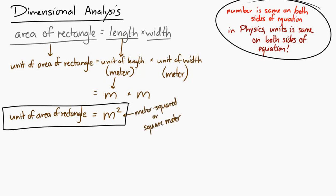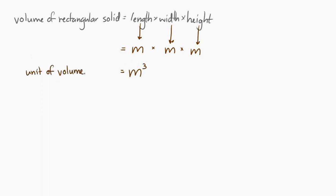And let's say we wanted to figure out the volume of a rectangular solid. Well, the volume of a rectangular solid is length times width times height. So, if we look at the units on the right hand side, the units of each of these things is a meter. So, the unit of the volume is a meter times a meter times a meter or a meter cubed.